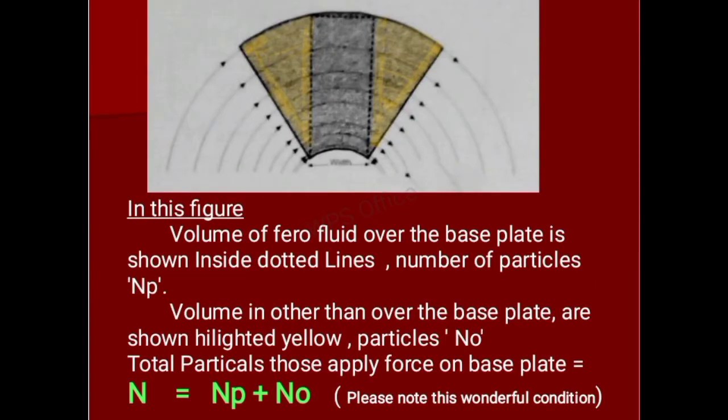In this figure, the volume of ferrofluid over the base plate is shown inside dotted lines, with number of particles NP. The volume in positions other than over the base plate is shown highlighted in yellow, representing particles No. Total particles that apply force on the base plate equals N, which equals NP plus No. Please note this wonderful condition.